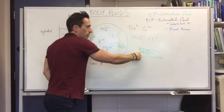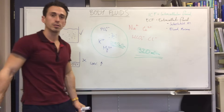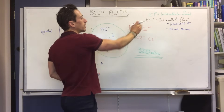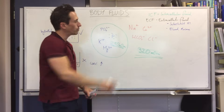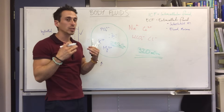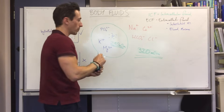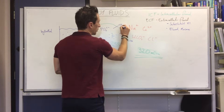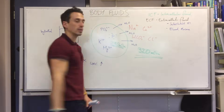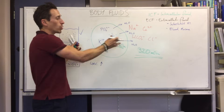If you have 320 milliosmoles outside the cell compared to 290 inside, there's a concentration difference. Sodium and calcium want to diffuse in, but the plasma membrane blocks them. So water tries to balance things out — water moves toward the higher solute concentration, which is outside the cell. Water moves out of the cell, causing it to shrink — a process called crenation. The next video will cover how the body responds to this scenario.